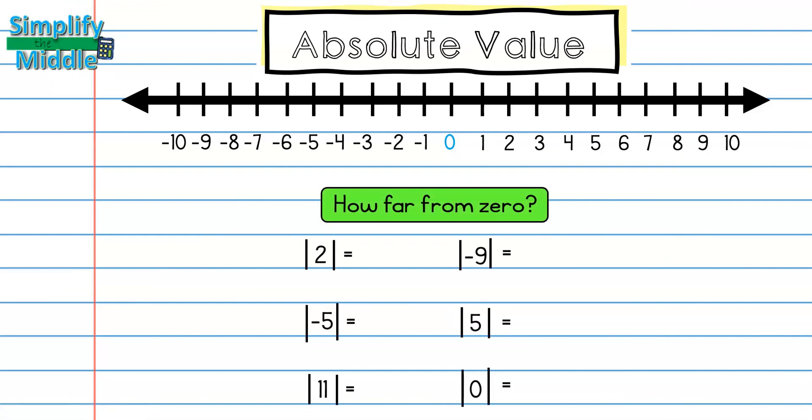Let's try some more examples. I want to know what the absolute value of 2 is. I can use this number line to help me. I know that 2 is right here and there is a distance of 1, 2 to get to 0. So the absolute value of 2 is 2.